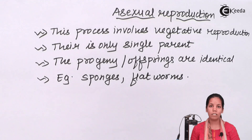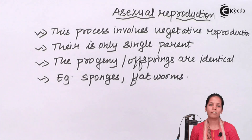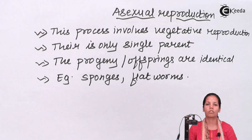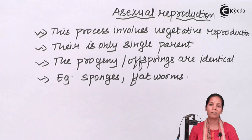Vegetative propagation is also a type of asexual reproduction. Hydra, planaria, and gemmule formation are kinds of asexual reproduction. So students, in this part of the chapter we came across asexual reproduction and I hope we are all very clear with this concept. Thank you!